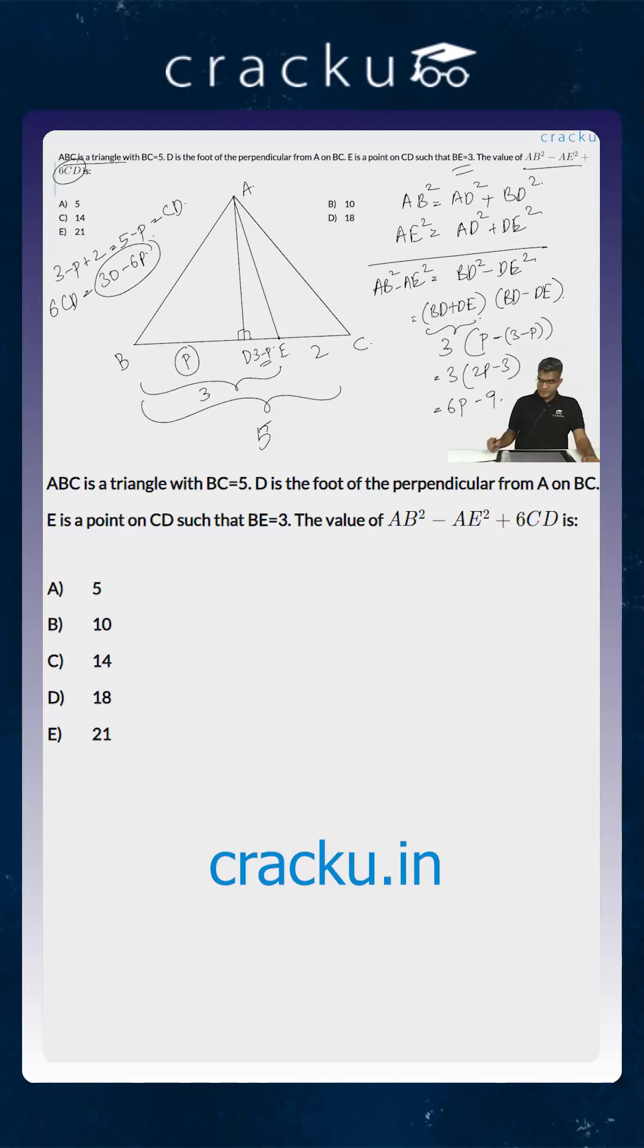So 6CD plus AB square minus AE square is the sum of 30 minus 6P plus 6P minus 9 which is equal to 21. Because minus 6P gets cancelled with 6P, you are left with 30 minus 9 which is equal to 21. So the answer for this question is option E.